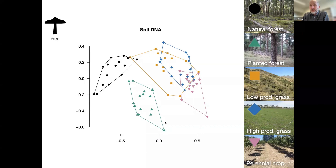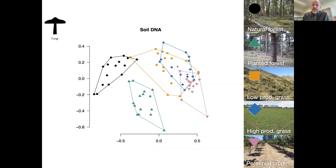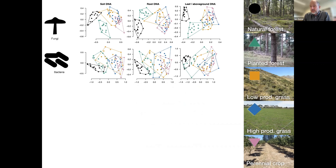So what did we find? I'm going to show a lot of data as ordinations looking at composition. This is soil DNA, just the fungal community. The black spots — natural forest — separate out really nicely from most other land uses. Planted forest sits distinctly off to one side. Then the other three land uses go in order from low-producing grassland to high-producing grassland to perennial crops, with larger and larger shifts in the fungal community. We did that across substrates — soil, roots, and leaves — and they all show the same patterns. The same was true for bacteria, oomycetes, animals, and plants; it tended to be that same order.